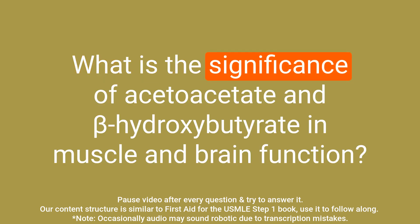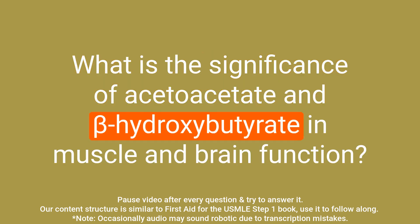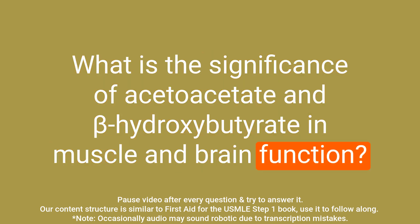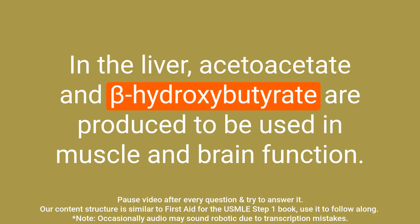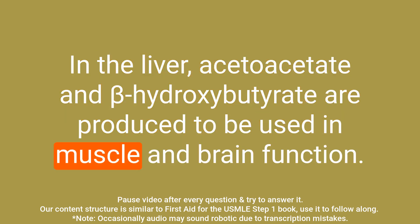Question: What is the significance of acetoacetate and beta-hydroxybutyrate in muscle and brain function? Answer: In the liver, acetoacetate and beta-hydroxybutyrate are produced to be used in muscle and brain function.